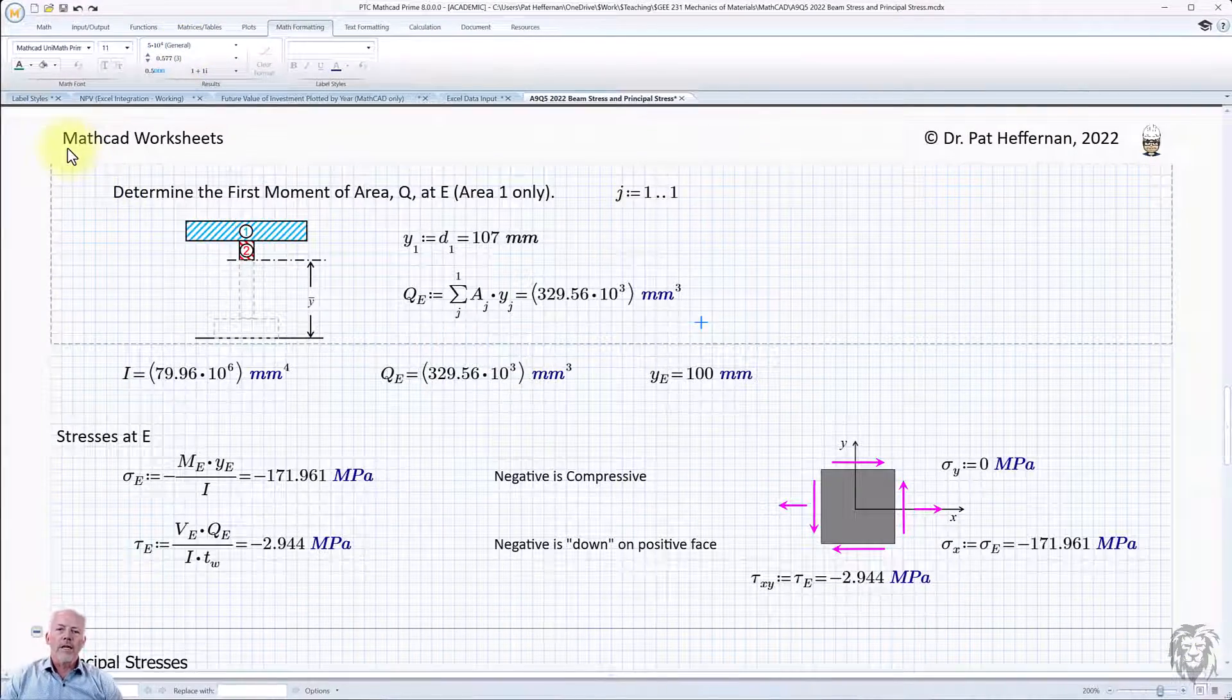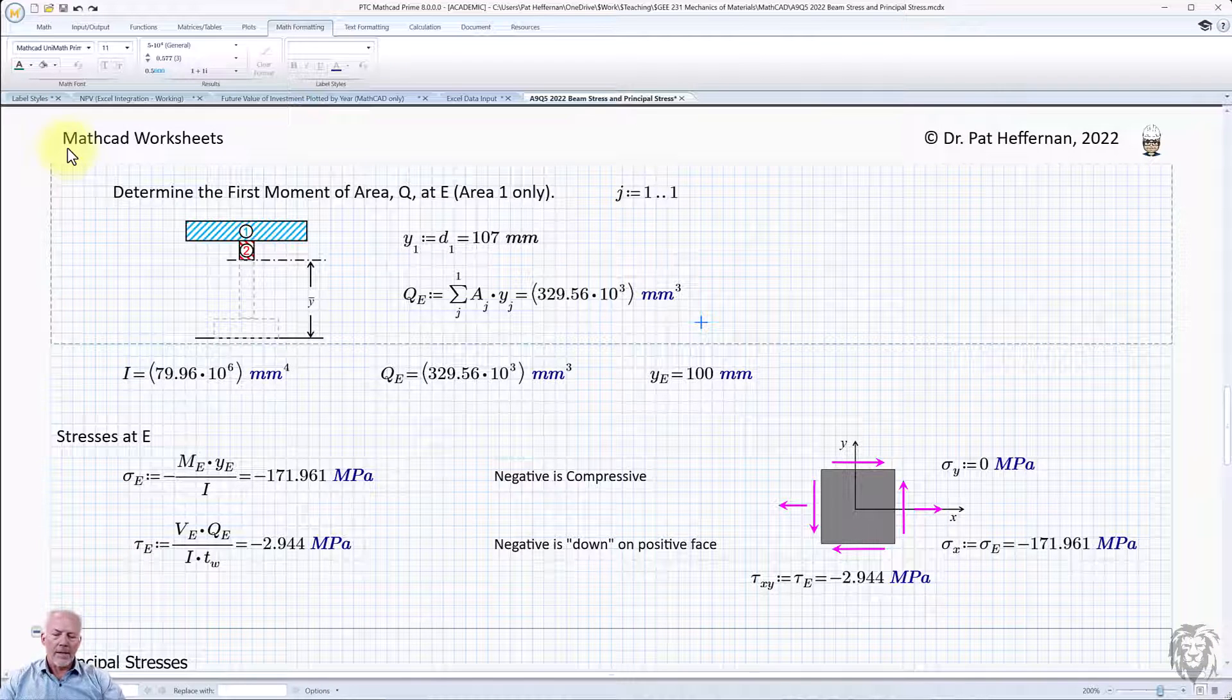So the one thing that you need to understand about formatting math expressions in MathCAD is that you have defaults and you have specific annotations to the specific expression at a time. Normally when we're going through and creating our calculation sheet, we don't bother to make very specific annotations or requirements of individual expressions, which means that if we were to change the default, then that would affect everything.